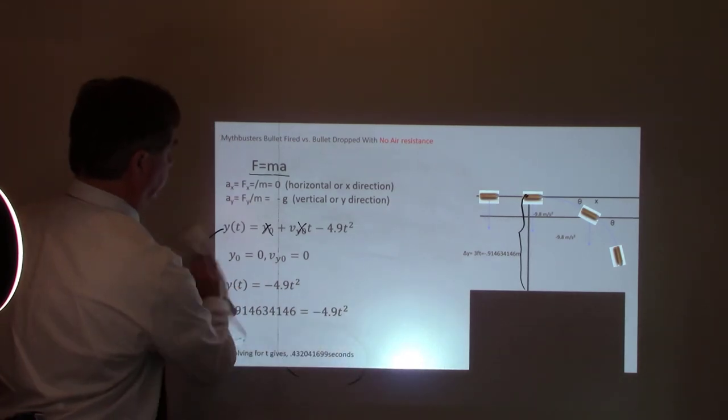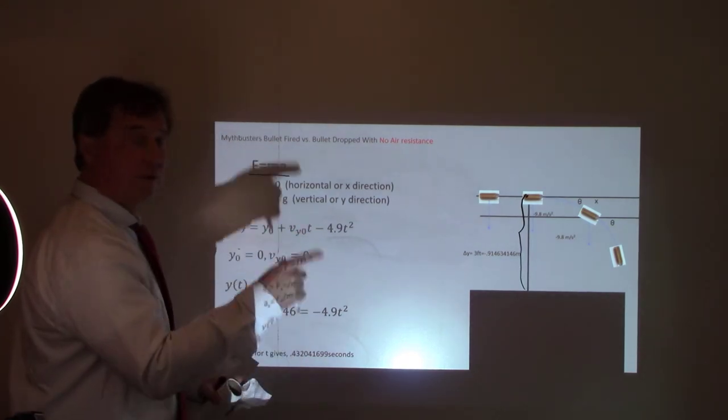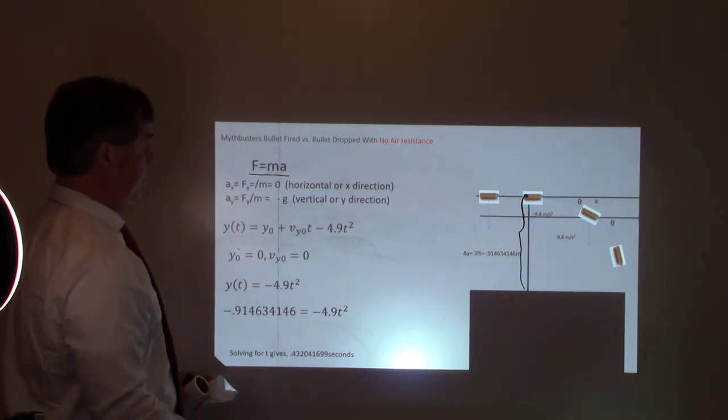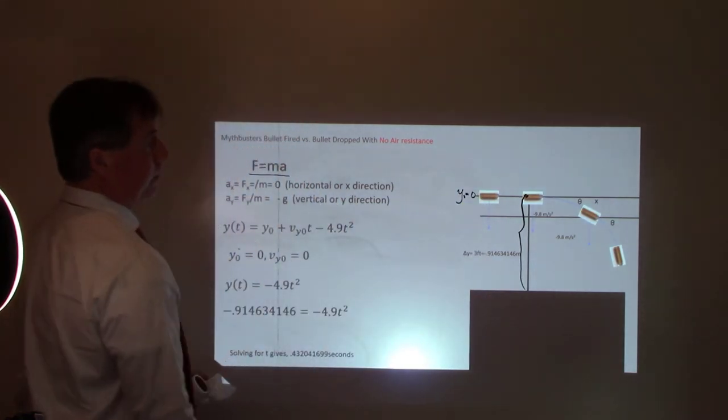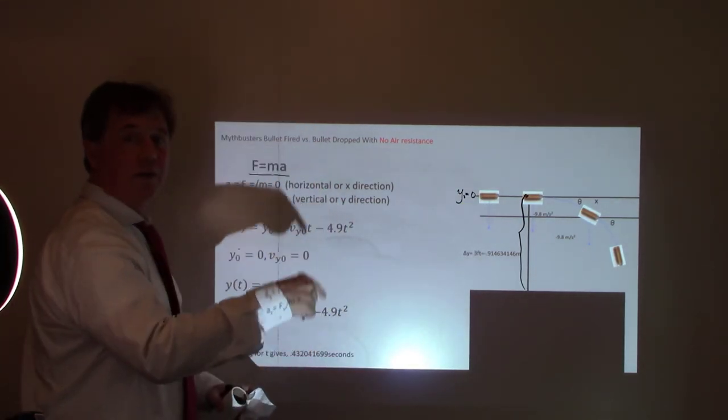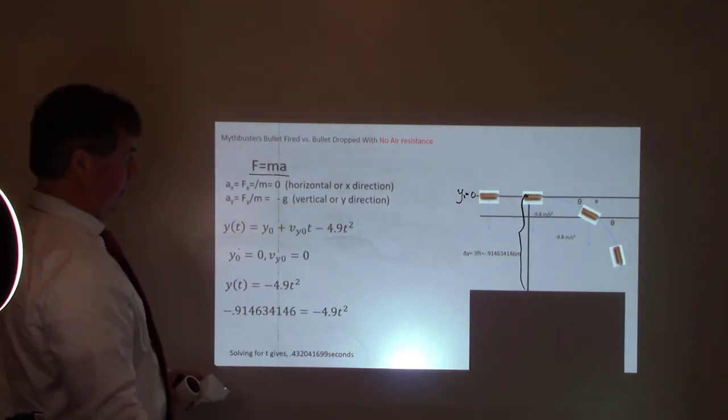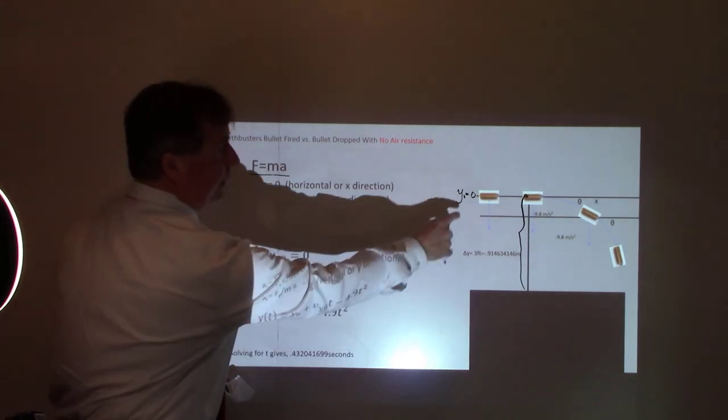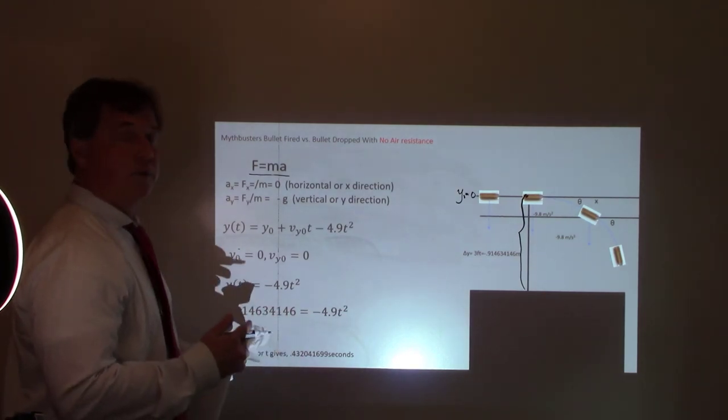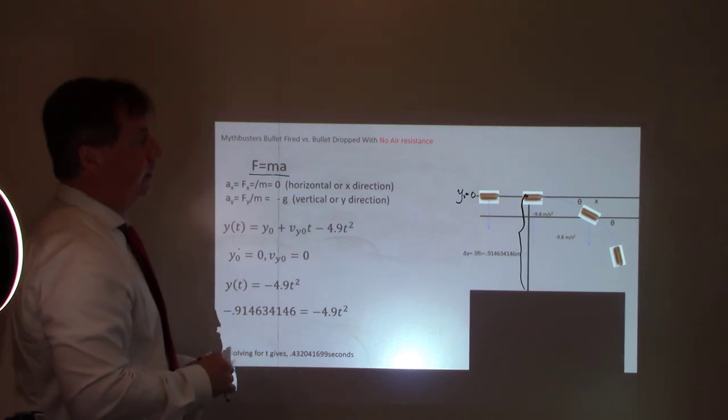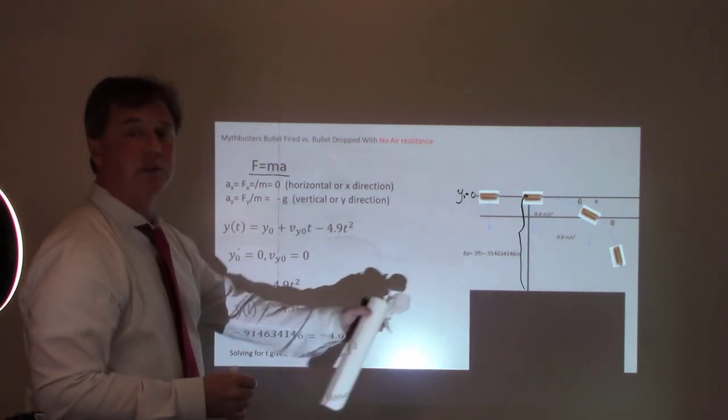Now what about the drop bullet? How long does it take the drop bullet to hit the ground? We're talking about the vertical direction, the y-direction. So we're going to use this equation again. We're going to drop the bullet. The initial y is zero. The initial velocity in the y-direction is also zero. We're just going to let it drop. We're not going to throw it down. So this becomes this again. And we're dropping it the same distance as the fired bullet. Same time. So Newton's second law, and that's all we've used here, says the time it takes for a bullet fired from a gun and the time it takes for a dropped bullet to hit the ground are absolutely the same.